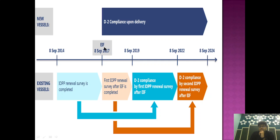For ships constructed before that date — for example, a ship constructed on 8th September 2014 — it will undergo its first renewal survey after entry into force, which would be around 8th September 2019. At that first renewal survey, they have to comply with D2 compliance and install the ballast water treatment system. However, if a ship's first IOPP renewal falls between 8th September 2017 and 8th September 2019, they have to comply with D2 at the second IOPP renewal survey after entry into force.